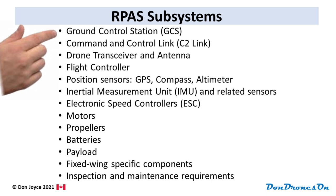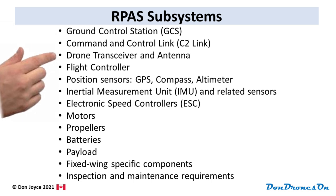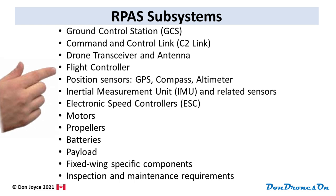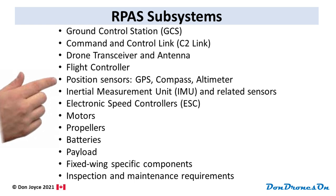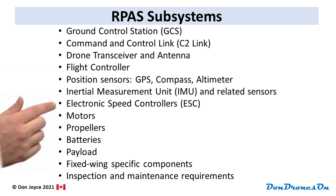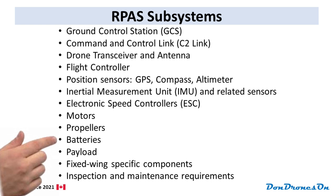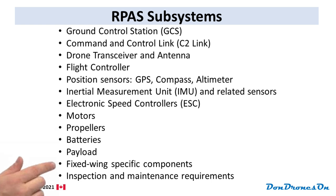Ground Control Station, Command and Control Link, Drone Transceiver and Antenna, Flight Controller, Position Sensors, GPS, Compass, Altimeter, Inertial Measurement Unit and Related Sensors, Electronic Speed Controllers or ESCs, Motors, Propellers, Batteries, the Payload and the fixed-wing specific components. And to finish off, I'll talk about inspection and maintenance requirements.